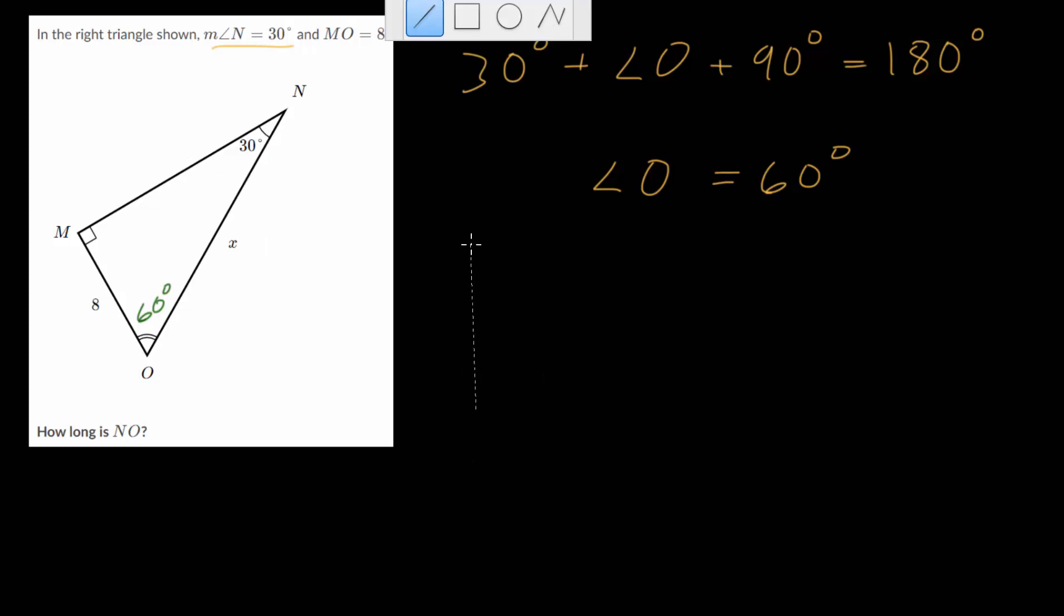Let's say we have some random 30-60-90 right triangle. And remember, these right triangles are always half of an equilateral triangle. So if we drew in the other half, it would look something like this.